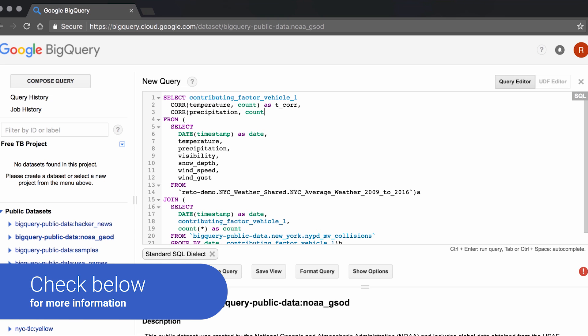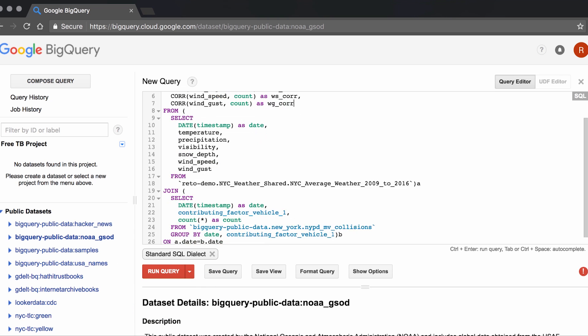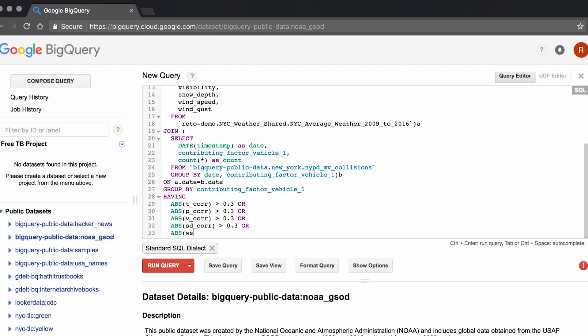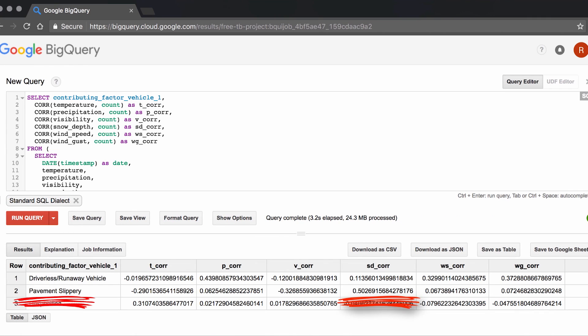This query returns the correlations between each of our weather variables and each of the primary causes of motor vehicle accidents. The results table suggests two possibilities: accidents caused by slippery pavements related to snow and wind gusts related to runaway cars.